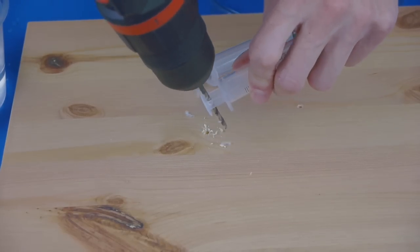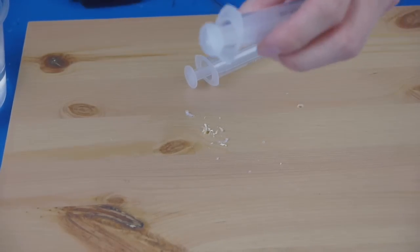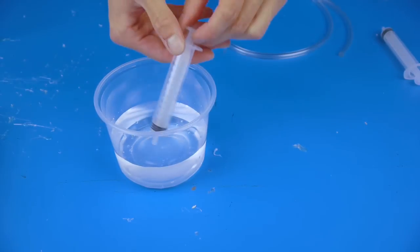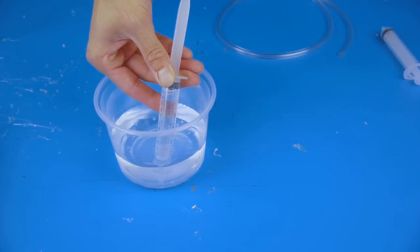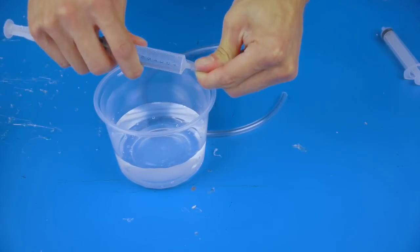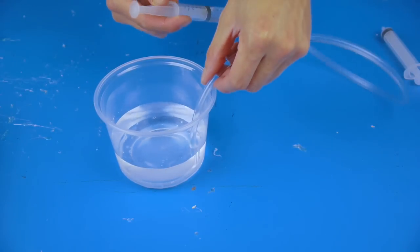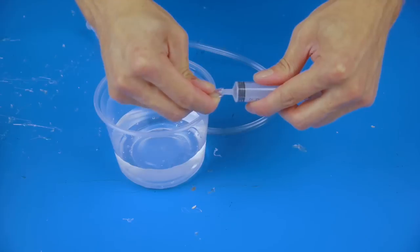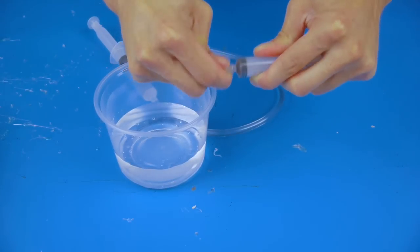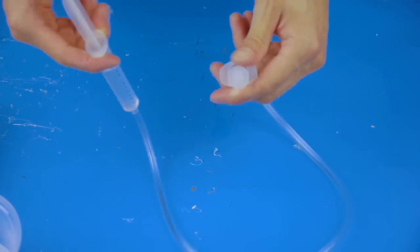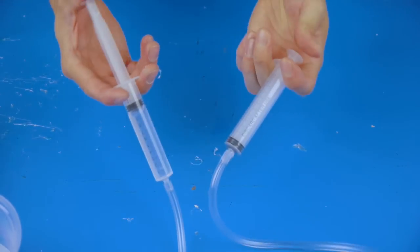Time to make the hydraulic systems. Begin by drilling an eighth inch hole through the syringe plunger. Fill up one syringe with water, attach the tubing, and then push water through the tubing to remove all of the air. Fill it back up to 10 milliliters, attach the other syringe, and try it out.